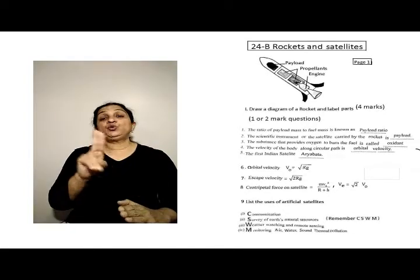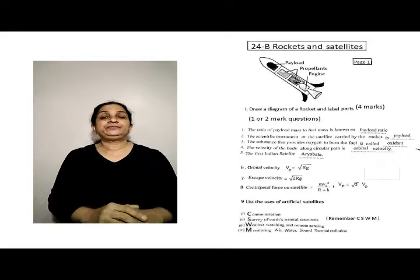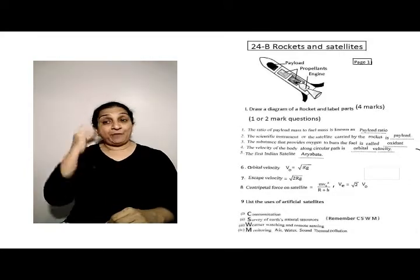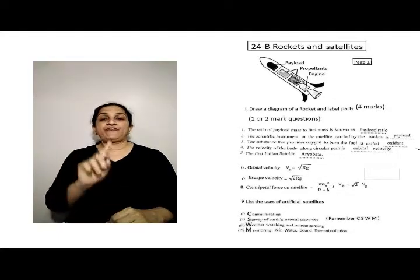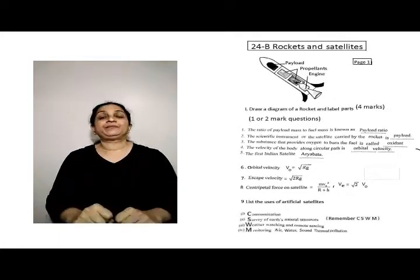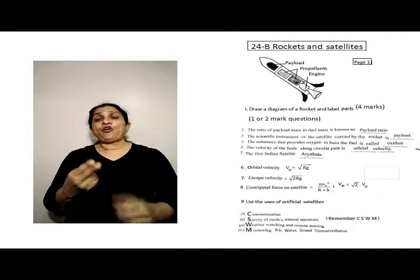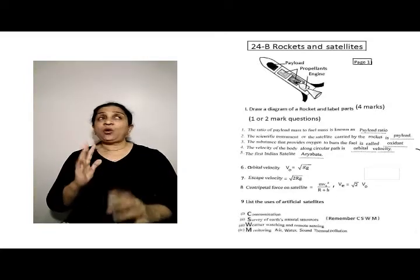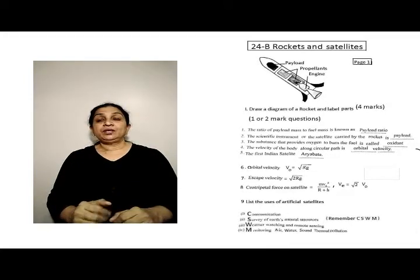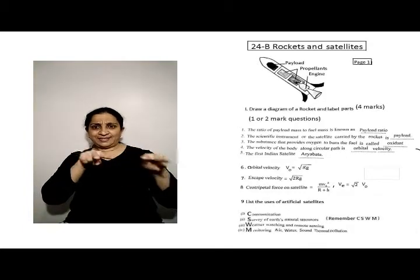List the uses of artificial satellites. You have to remember CSWN. First, communication. S is surveying of the natural resources. Third, weather watching.